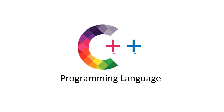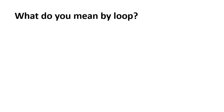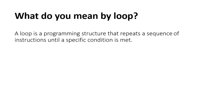We are going to talk about loops in the C++ programming language. Loop kya hote hai? What do you mean by loop? A loop is a programming structure that repeats a sequence of instructions until a specific condition is met. Jab tak humari condition meet nahi hoti, tab tak humara instruction baar baar execute hota rehta hai.